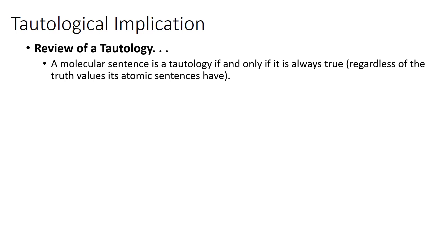What is a tautology? Let's review. A molecular sentence is a tautology if and only if it is always true, regardless of the truth values its atomic sentences have. Those atomic sentences can be true or false. Regardless, with any possible truth-functional relation, the molecular sentence will always get the truth value of being true. And that's what makes it a tautology — it cannot be false.